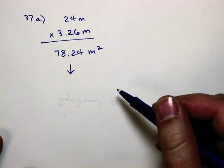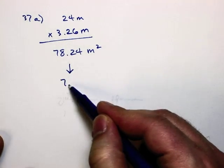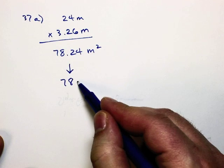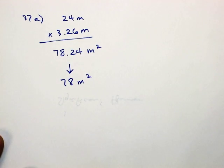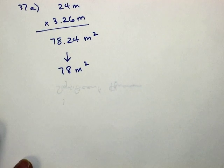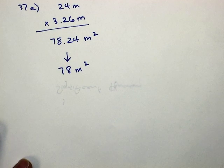So, the question is how do I make 78.24 into a two-digit number? What are the two most important digits? Seven and eight. Seven and eight. So, we could say 78 meters squared, couldn't we?